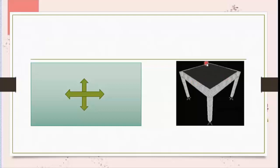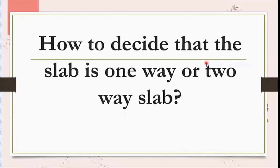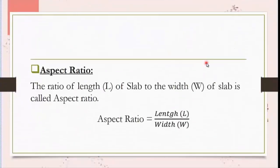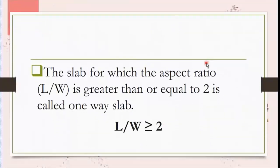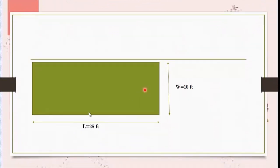Now we will learn how to decide whether a slab is a one-way slab or a two-way slab. For this, we define a parameter called aspect ratio. The ratio of the length of the slab to its width is called the aspect ratio. Mathematically, aspect ratio equals length of slab divided by its width. A slab for which the aspect ratio is equal to or greater than two is called a one-way slab. For example, if the length is 25 feet and width is 10 feet, the aspect ratio equals 25 divided by 10 which equals 2.5, which is greater than two — so it is a one-way slab.